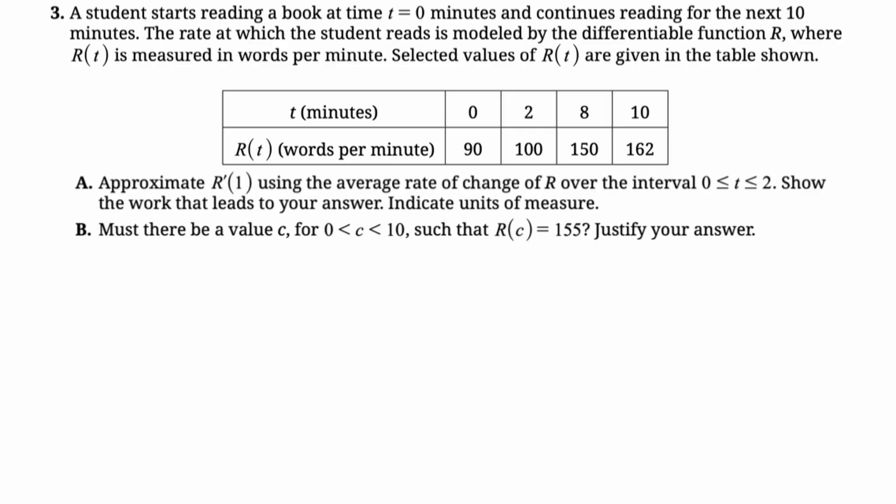A student starts reading a book at time t equals zero minutes and continues reading for the next 10 minutes. The rate at which the student reads is modeled by the differentiable function r, where r of t is measured in words per minute. Selected values of r of t are given in the table below, so t is in minutes, r of t is in words per minute.